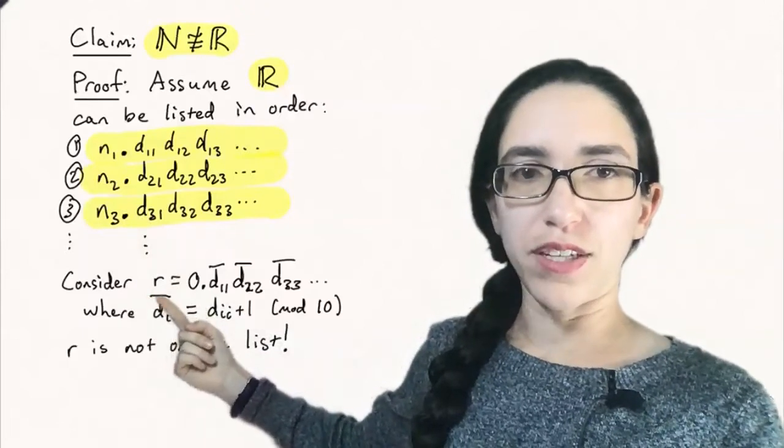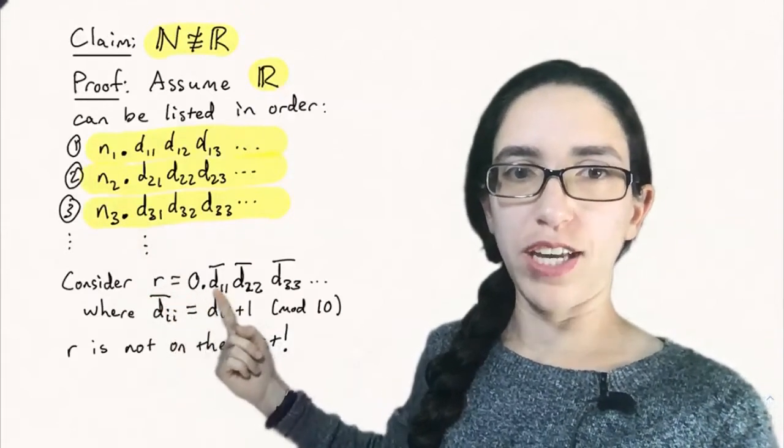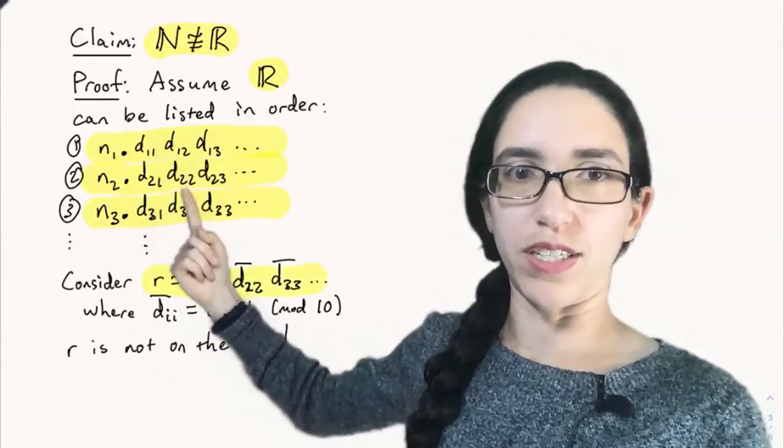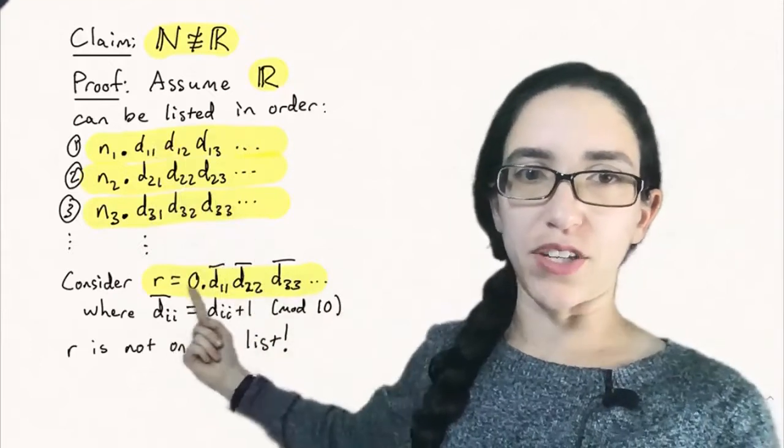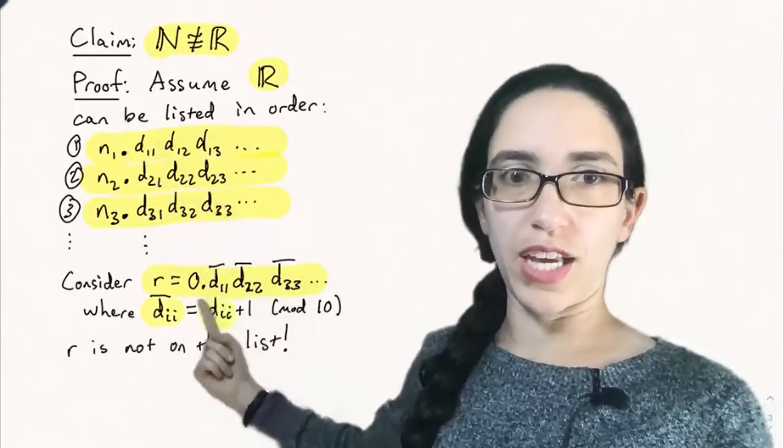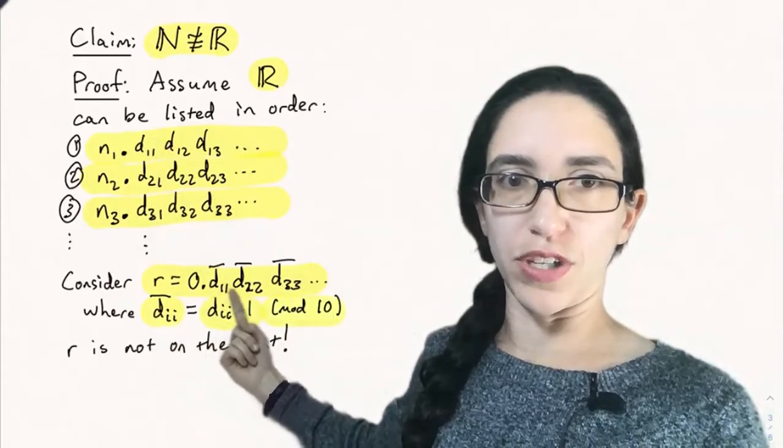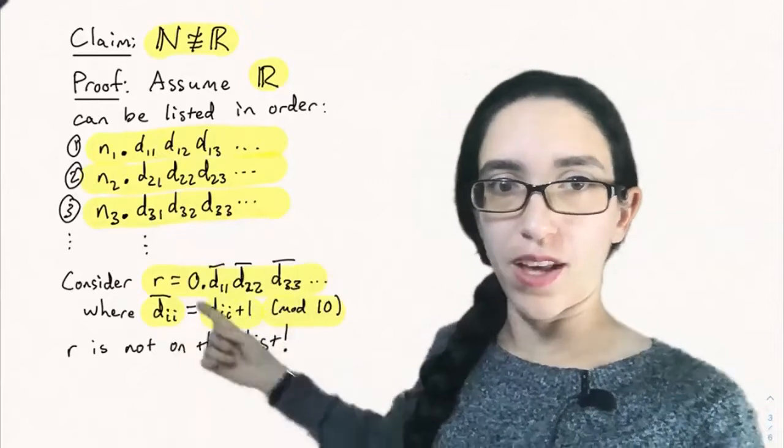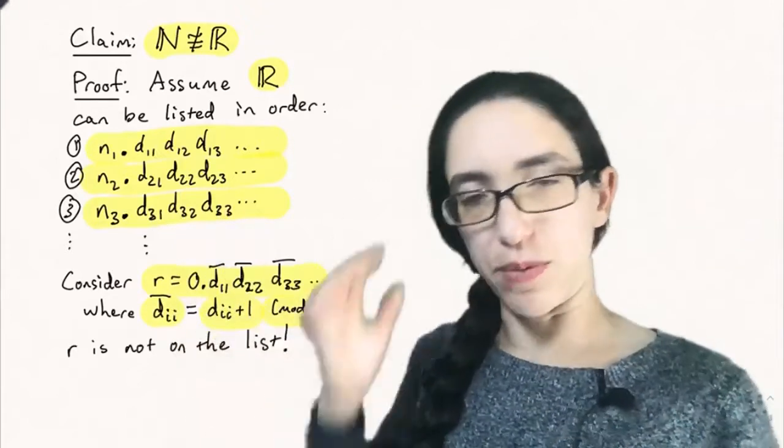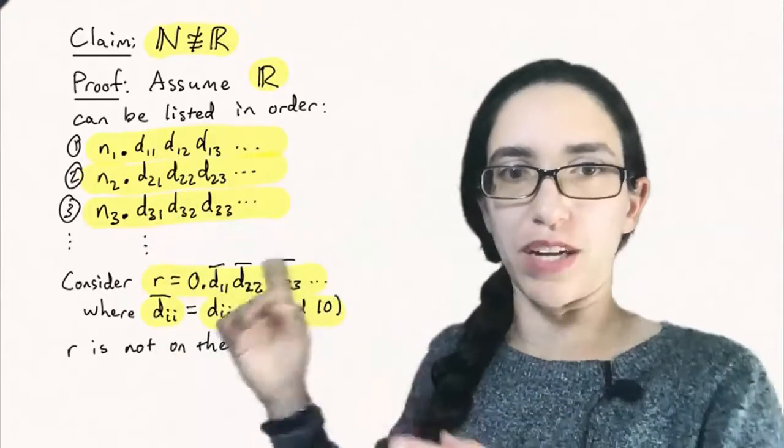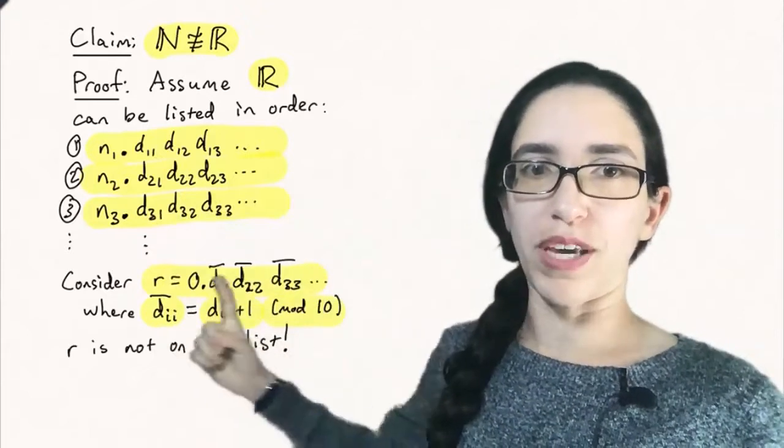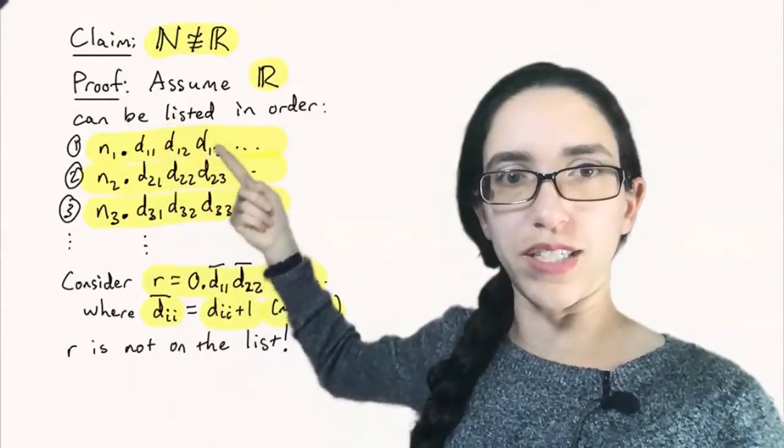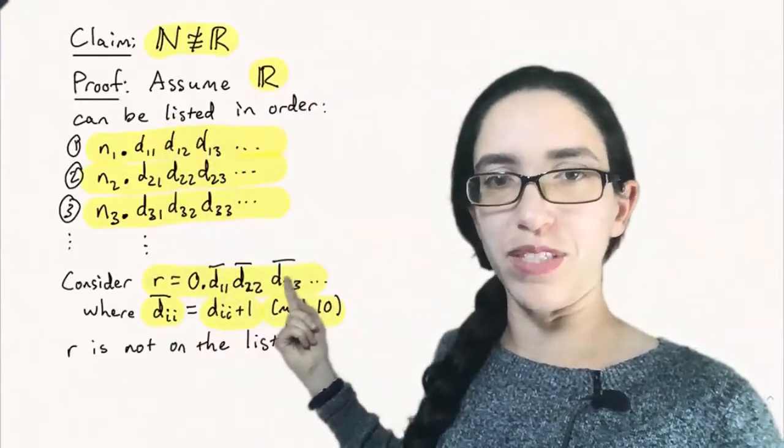And now we consider the number formed by changing each of the diagonal digits. So take d11, d22, d33, take the diagonal and make a new decimal where you change each digit where d11 hat is you add one cyclically wrapping around mod 10. You have to worry a little bit sometimes with 0.9 bar formats, but there's always a way of changing all these digits so that you make a new number and this number can't be on this list because it's different from every one of these numbers in the list by some dii because we changed each of those diagonal elements.